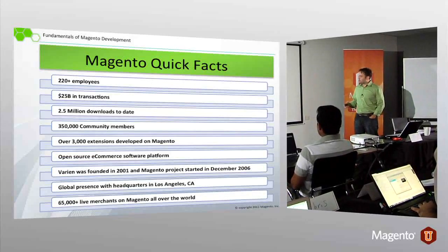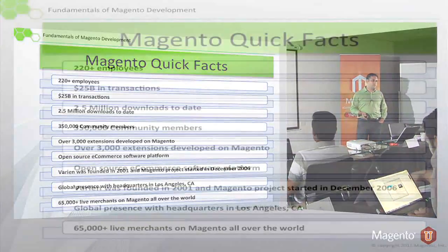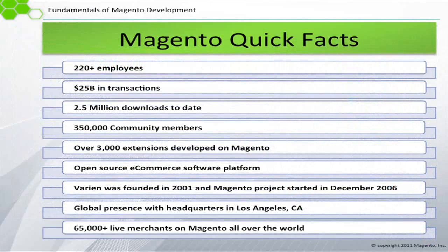Magento started out as Varian and has since become Magento Incorporated. And we're right here at the global headquarters in Los Angeles.